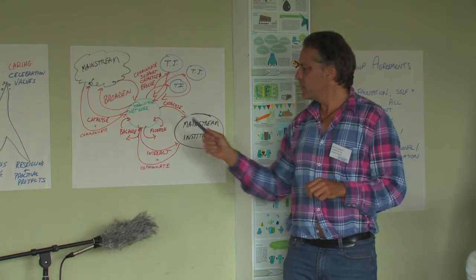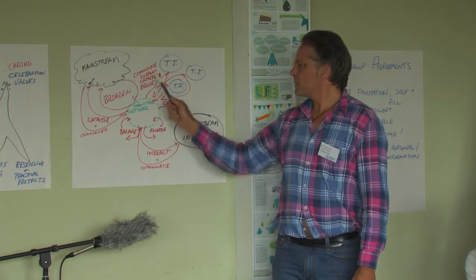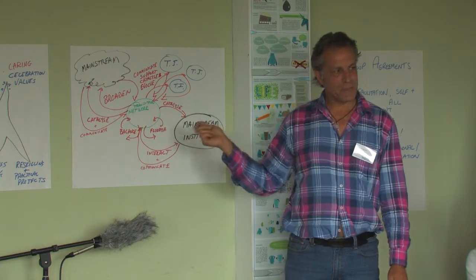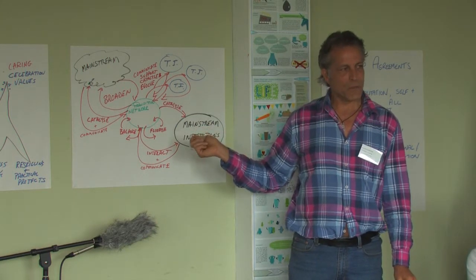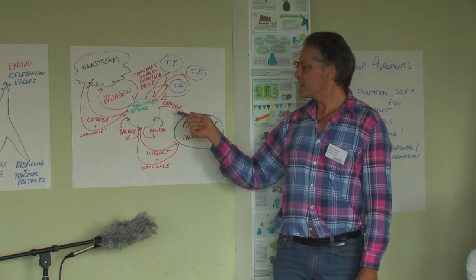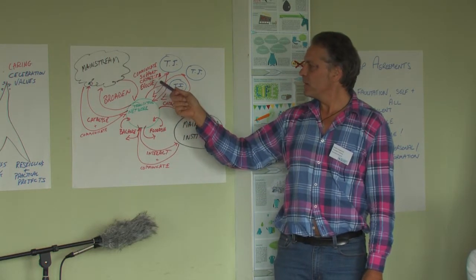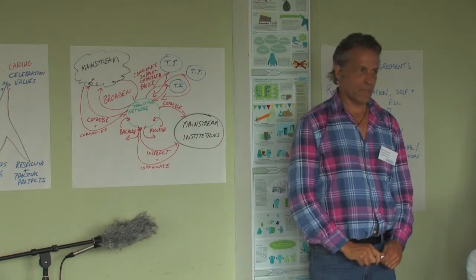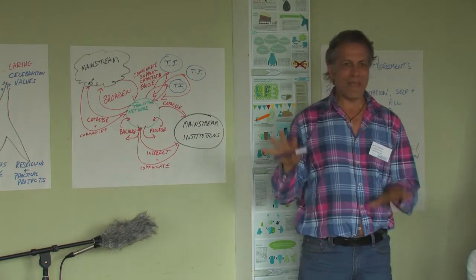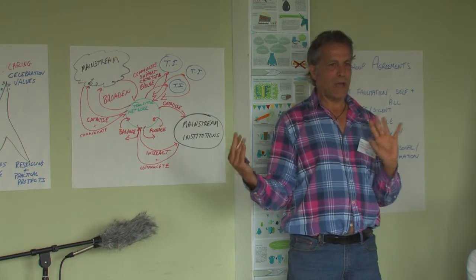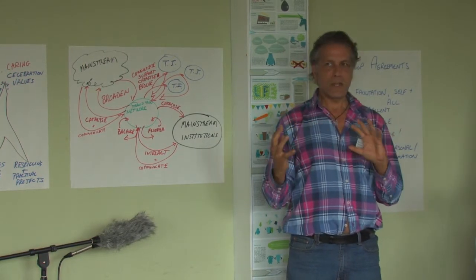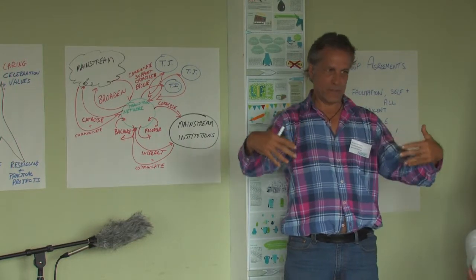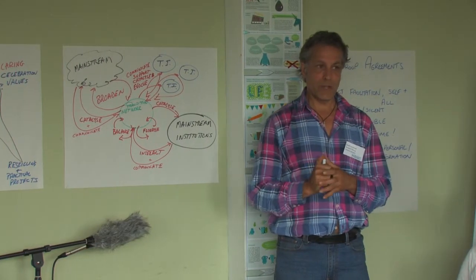On this model, we've put words in red which are the strategic aims of Transition Network. These are words like flourish, balance, catalyze, evolve, support, communicate, and broaden. These are the kind of edges as we see it — how transition is creating edge with different parts of the system in order to create change.